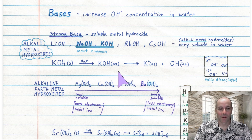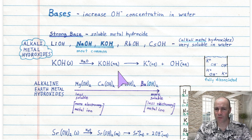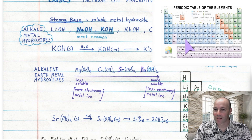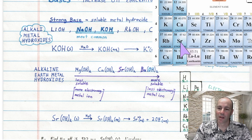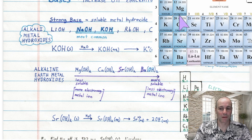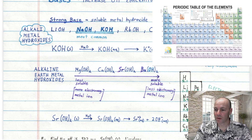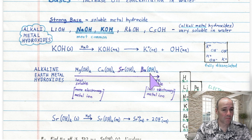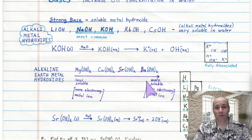Now there are some other soluble metal hydroxides, just a few others — most are insoluble. In the alkaline earth column, which is group two next to the alkali metals, the lower alkaline earth metals have more soluble hydroxides than the upper ones. So strontium and barium hydroxides are more soluble than magnesium and calcium hydroxides — you get more soluble as you go down the column.